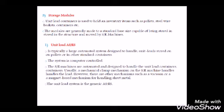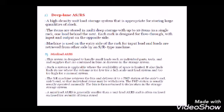The deep-lane ASRS system, as the name indicates, allows storage of materials in depth — not only vertically in the racks but also horizontally. In one particular rack you may have different rows inside it. Items are stored in multi-deep storage with up to 10 items in a single rack, one load behind the next. Each rack is designed for flow-through, with input and output on opposite sides — the machine enters one side for input and loads are retrieved from the other side.